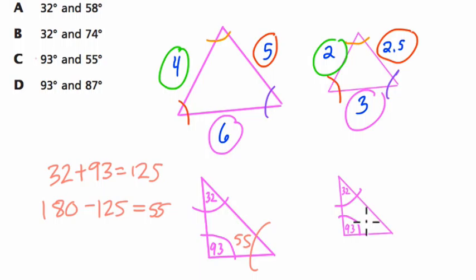And, the last angle, we can figure out, because they all have to add to 180. I know 32 plus 93 is 125. So, the third angle is 180 minus 125, which is 55 degrees. So, this angle has got to be 55, and so does this one. So, that tells me that C is the answer.